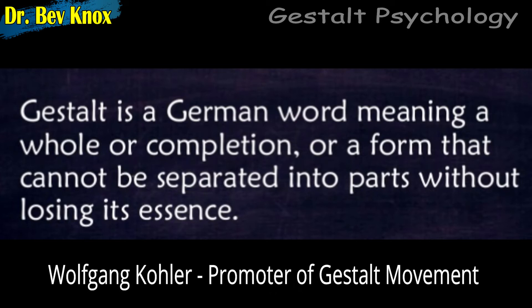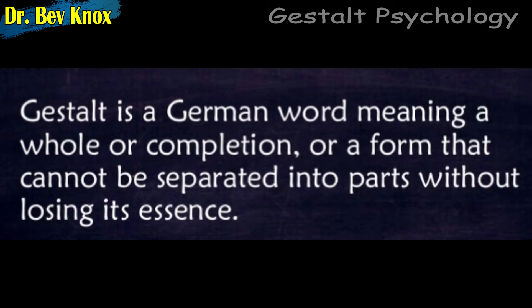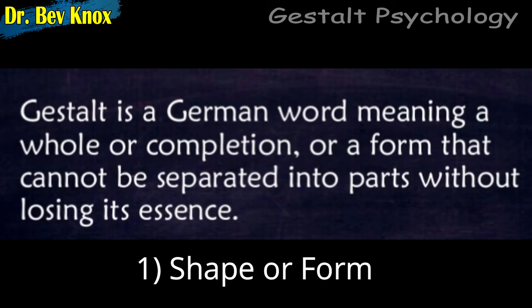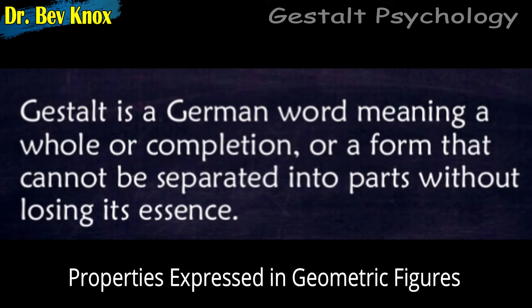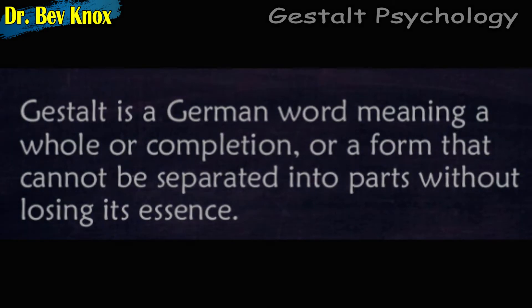In Gestalt Psychology in 1929, Collier noted that the word was used in two ways in German. One usage denotes shape or form as a property of objects. In this case, Gestalt refers to general properties that can be expressed in such terms as angular, and describes characteristics such as triangularity in geometric figures or tempos in a melody.